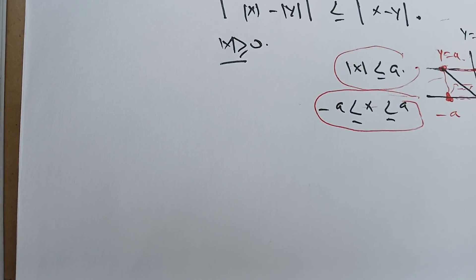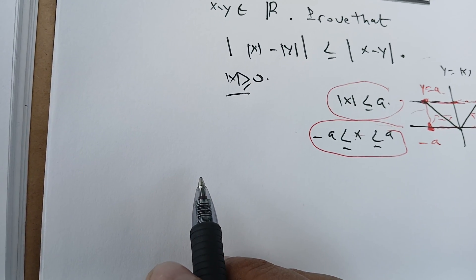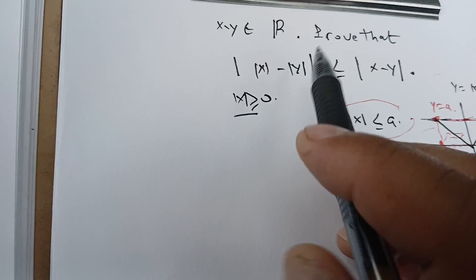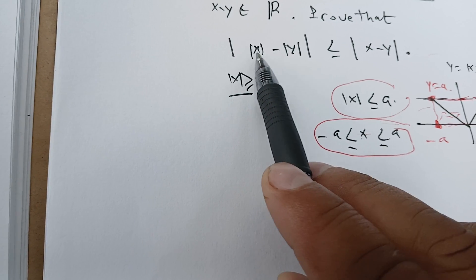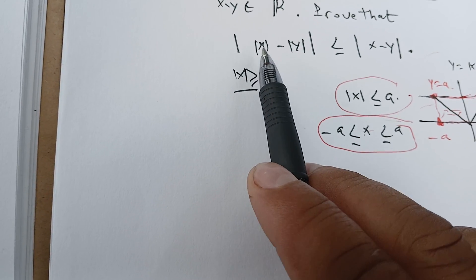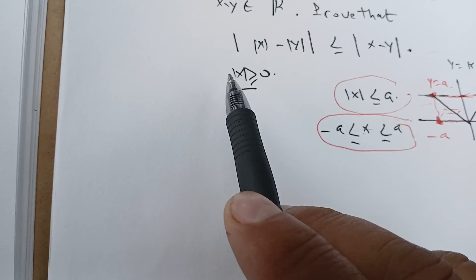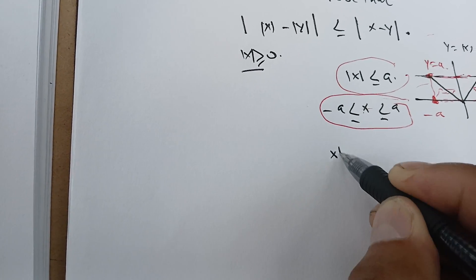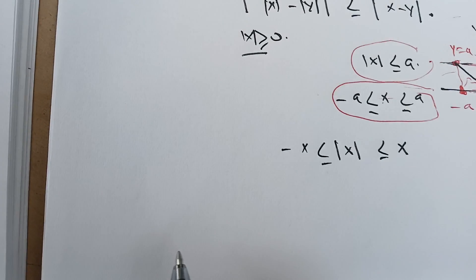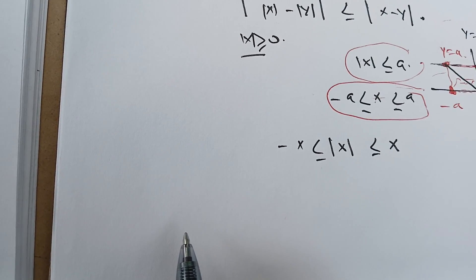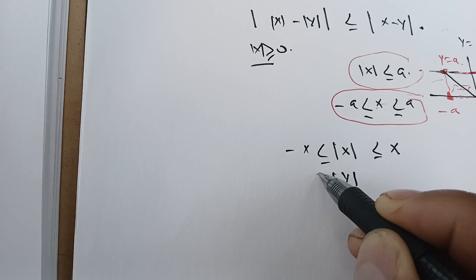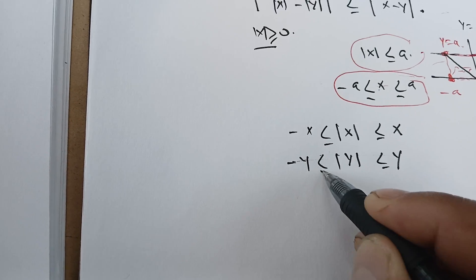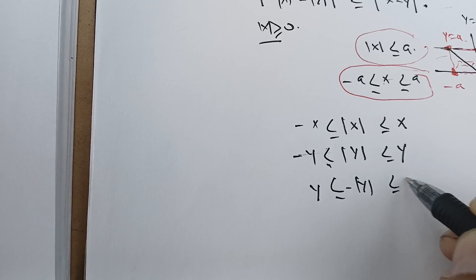Now we're going to use this idea for the proof. Since we're going to work with this double absolute value, we're going to use this key property. In this case, the absolute value of X means X is between minus X and X. The same thing for the absolute value of Y — it's between minus Y and Y.